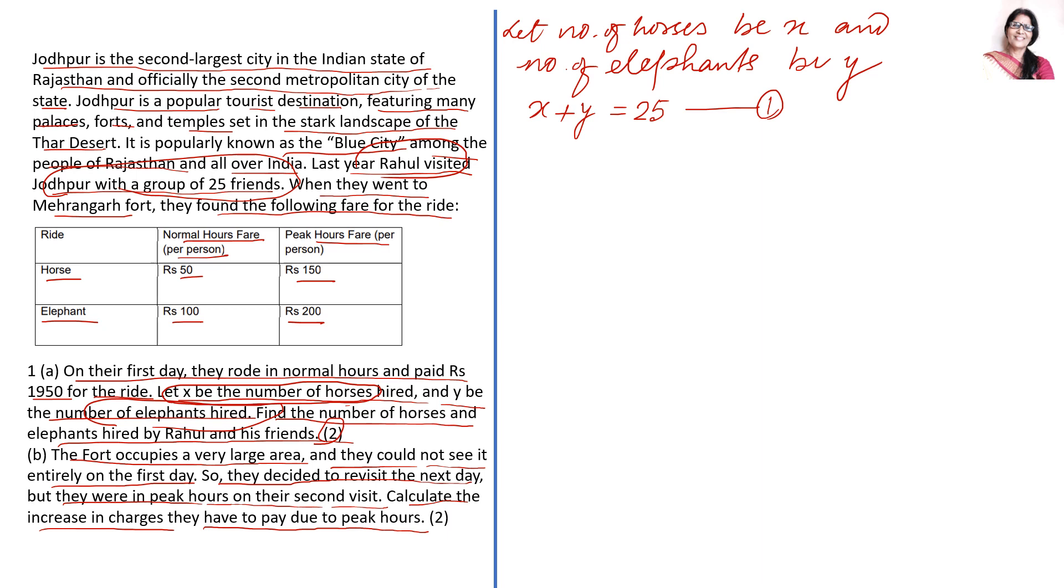On the first day when it was normal hours, they are paying the fare 50 into X and per elephant Y, so it will be 100 into Y. So the money they are paying, 50X plus 100Y is equal to 1950. This is your equation 2.